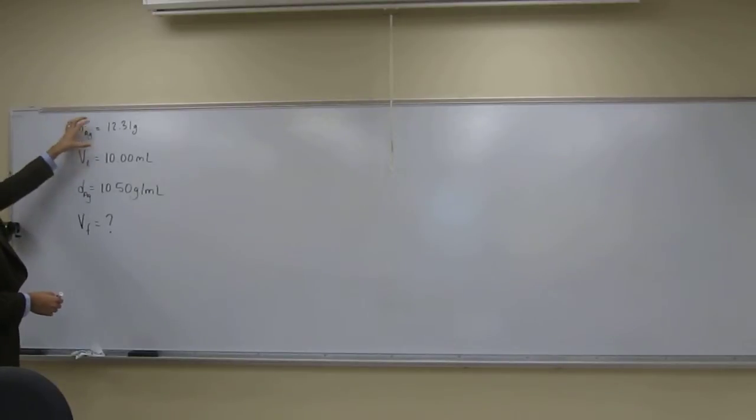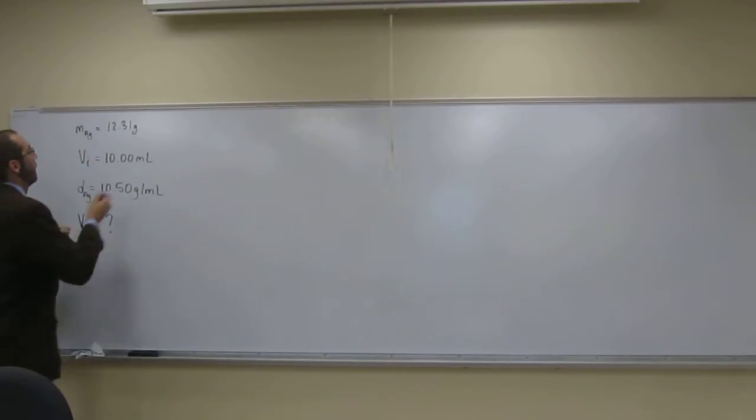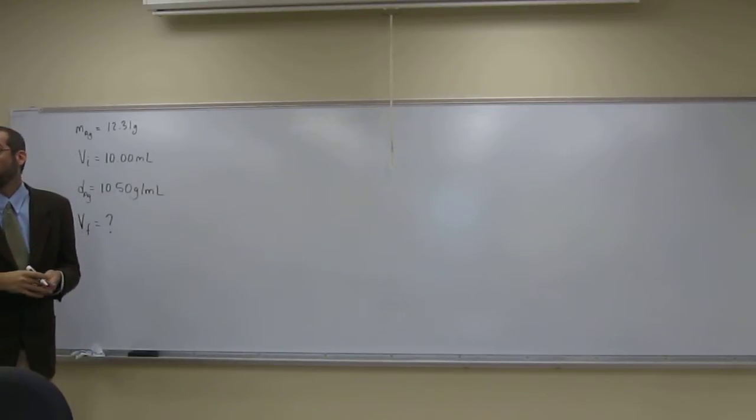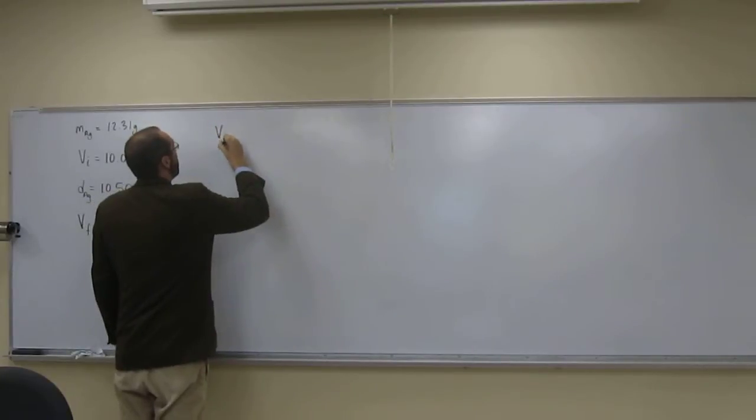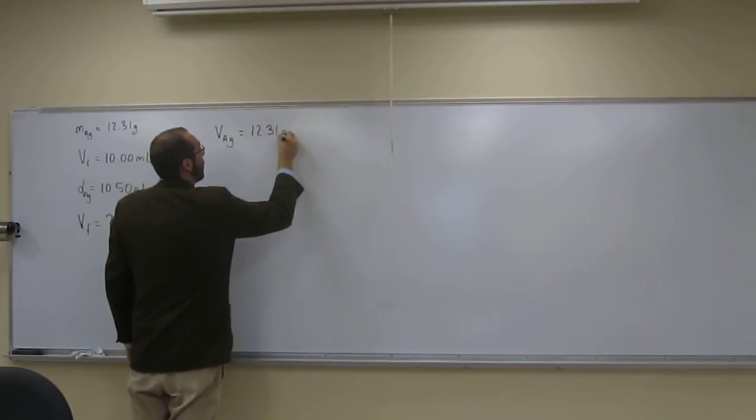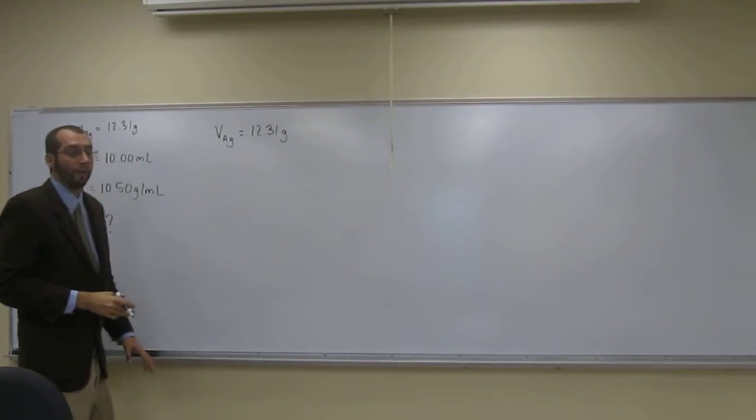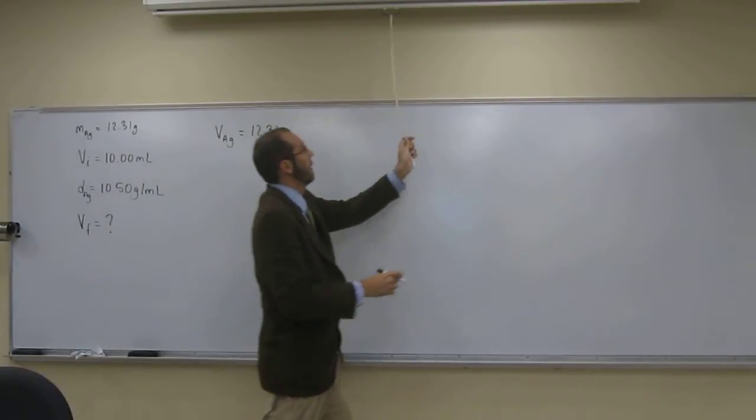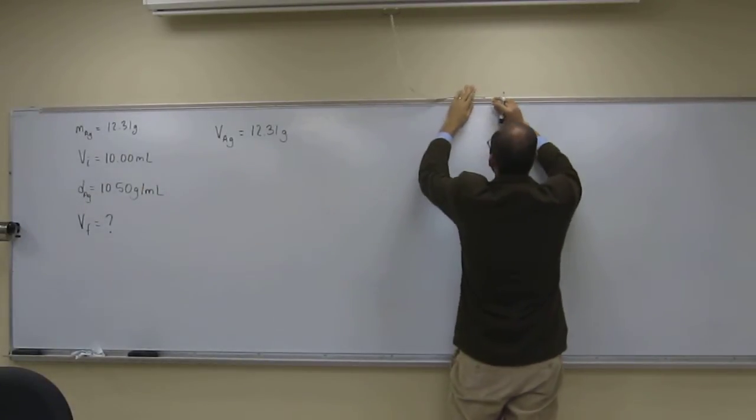So the mass of silver is that. Let's figure out how many milliliters of silver we have. What's the volume of silver? So how do we do that? The volume of silver, well we have the mass there, 12.31 grams, and remember we have a conversion factor here. So for every 10.5 grams makes one milliliter. So what we can do with this is use that as a conversion factor.